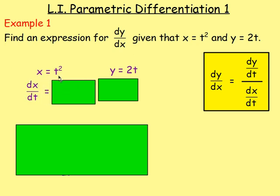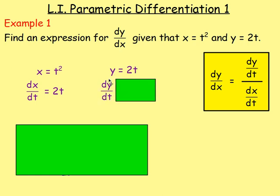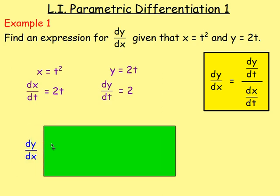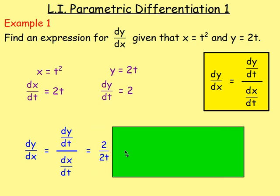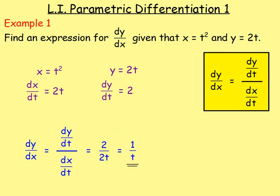Differentiating t squared gives us dx/dt equals 2t. And differentiating y, which is 2t, with respect to t gives us dy/dt equals 2. From there, we can work out dy/dx because dy/dx equals dy/dt divided by dx/dt. dy/dt is 2 and dx/dt is 2t, so we have 2 over 2t. Simplifying that gives us 1 over t. And that is your answer.